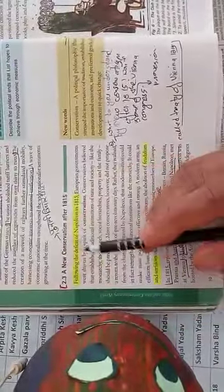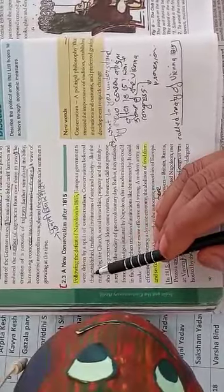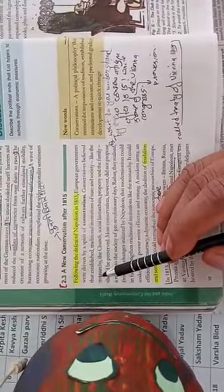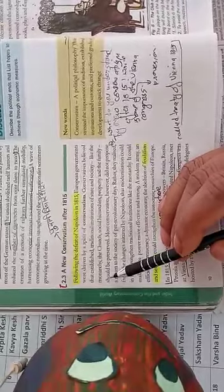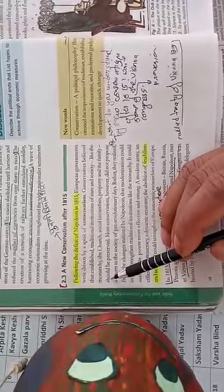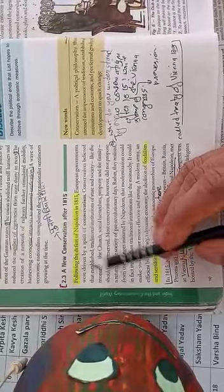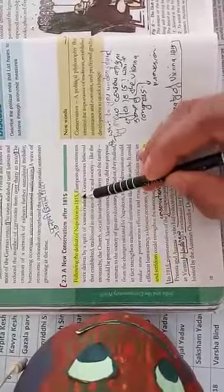Hello everybody, how do you do? I'm Rajesh, English and soft skills trainer. This is your Class 10th history, Chapter 1: The Rise of Nationalism in Europe. Dear students, today we'll discuss Part 15 of this chapter. The topic is 'A New Conservatism after 1815'. Let's start.